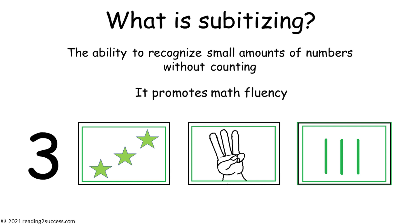Parents, today we will be switching to a math skill called subitizing: the ability to recognize small amounts of numbers without counting. In our example, all the pictures represent amounts of three. If kids can look at each picture and know that it represents three, they won't need to count each star, finger, or tally mark to determine its amount.